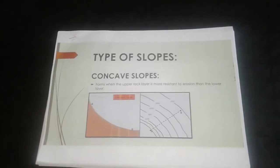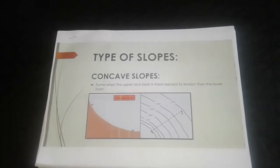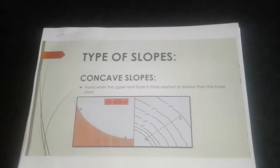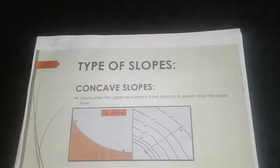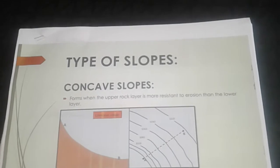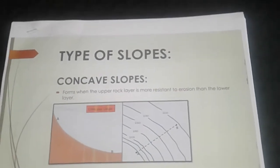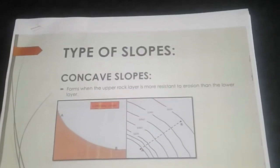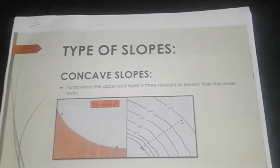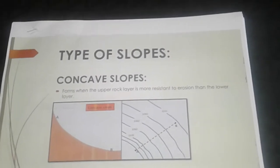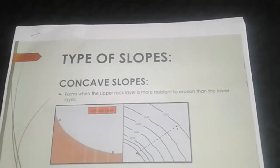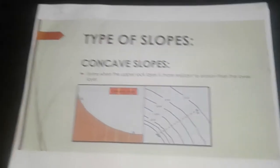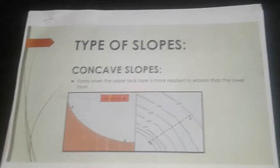Hello everybody, Grade 11s. Today we are going to look at slopes. Whenever we talk about slopes, we talk about the nature of the surface — is it gentle, is it steep, is it concave, is it convex? With gentle slopes, we know that our relief is very low, our gradient is lower, and identification of that is usually by contour lines far apart on the maps.